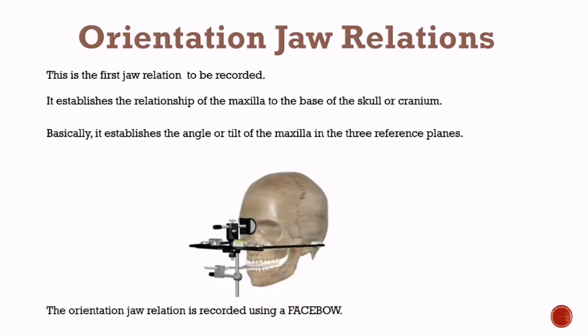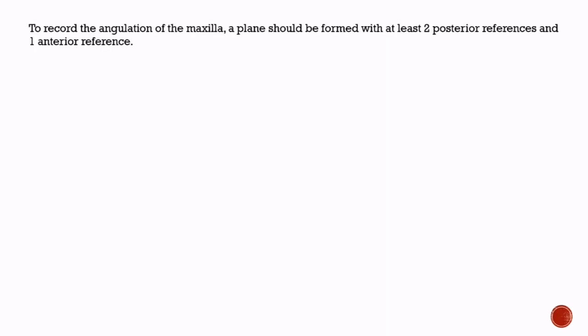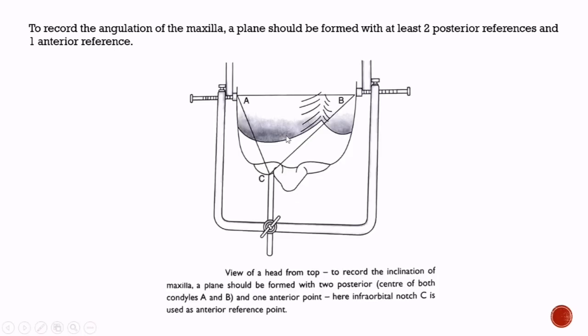The orientation jaw relation is recorded using a face bow. To record the angulation of the maxilla, a plane should be formed with at least two posterior references and one anterior reference. The center of both condyles is taken as the two posterior reference points, whereas the infraorbital notch is taken as the anterior reference point.